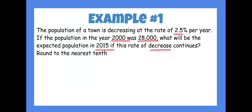We have our 28,000 as our P. We have an elapsed time from 2000 to 2015, and your 2.5%.